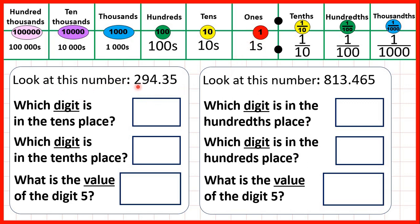Look at this number: two hundred and ninety-four point three five. Which digit is in the tens place? When we have decimals, we need to count place values from the decimal point. The digit before the decimal point is the ones digit, and the digit before that is the tens digit — so in this number we have nine in the tens place. Now which digit is in the tenths place? It's important not to get confused between tens, a whole number place value, and tenths with a 'th', which is a decimal place value. The tenths digit is the first digit after the decimal point, so for this number that's a three — three tenths.